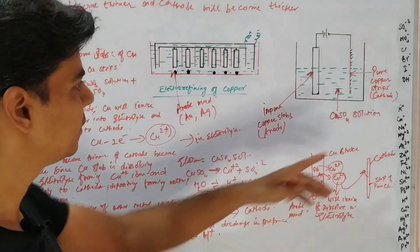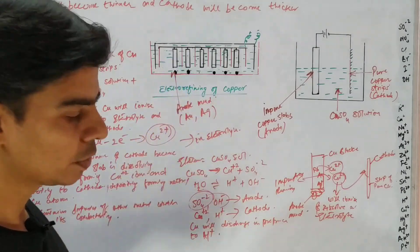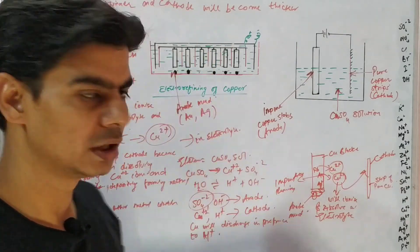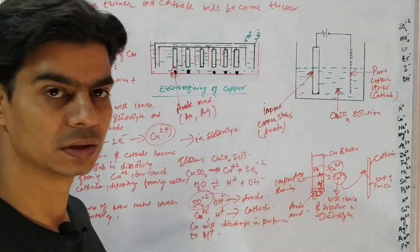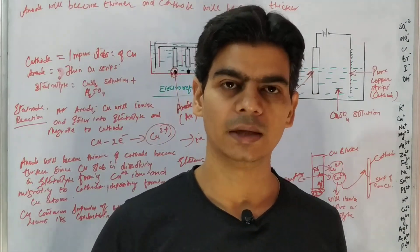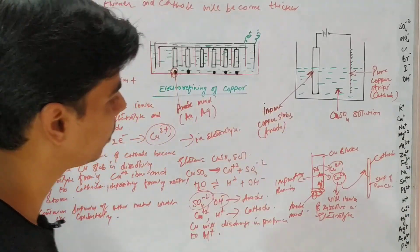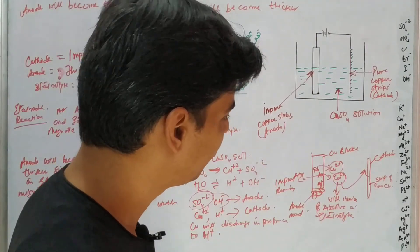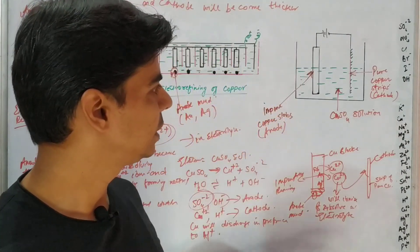Some of the impurities dissolve in the sulfuric acid added to the electrolyte. Those that cannot dissolve, like gold and silver, settle down near the anode — this is known as anode mud. Anode mud refers to insoluble metallic impurities that settle near the anode, while pure copper deposits at the cathode. This is how purification — electro refining of copper — is achieved.